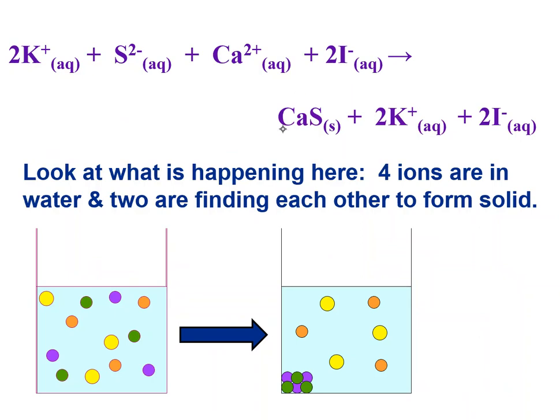This is the same reaction and I just wanted to look at what's happening. Both of the reactants were ionic and completely ionized. So basically we had four different ions going into solution. That's what's going on here and two of those ions are finding each other. The calcium and the sulfide weren't together at the beginning but they're finding each other and they're getting stuck together to form this solid down here and this is our precipitate.